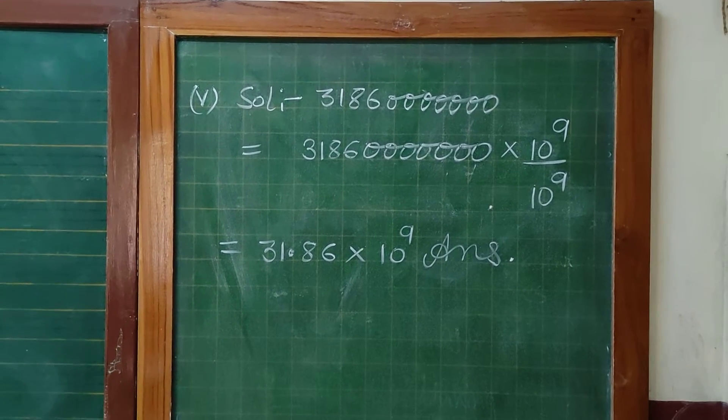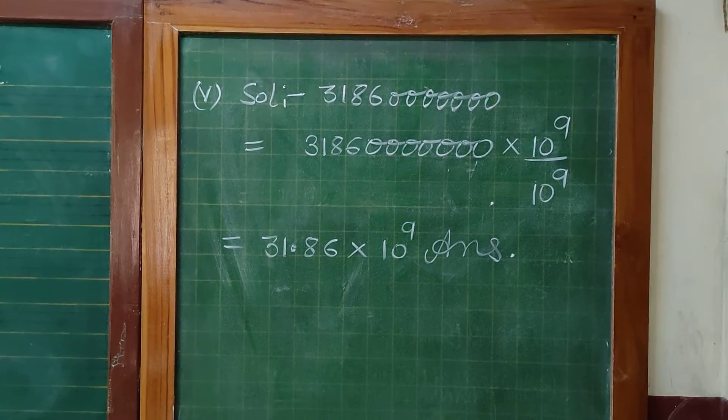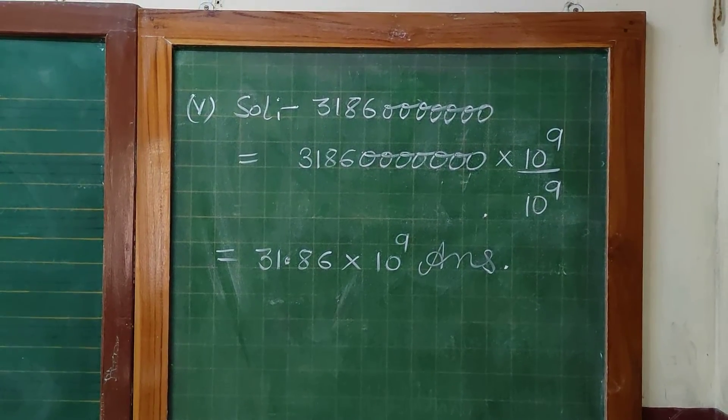Now 3, 1, 8, 6, and how many times 0? 1, 2, 3, 4, 5, 6, 7. Okay.